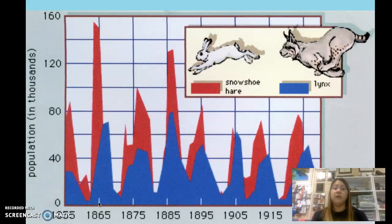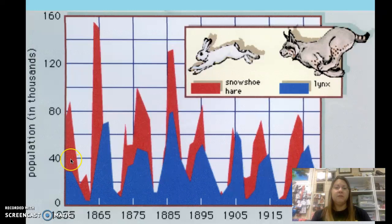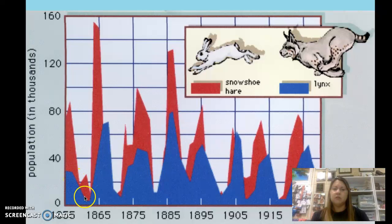This predator-versus-prey population graph is the same one in your lab notebook, and you are likely to see it on your EOG. The red line shows the snowshoe hare population (the prey), and the blue line shows the lynx population (the predator). Starting in 1855 and going through 1925, you can see the snowshoe hare population has a dramatic increase, the lynx population increases as well, and then when the prey population declines, the predator population starts declining too.